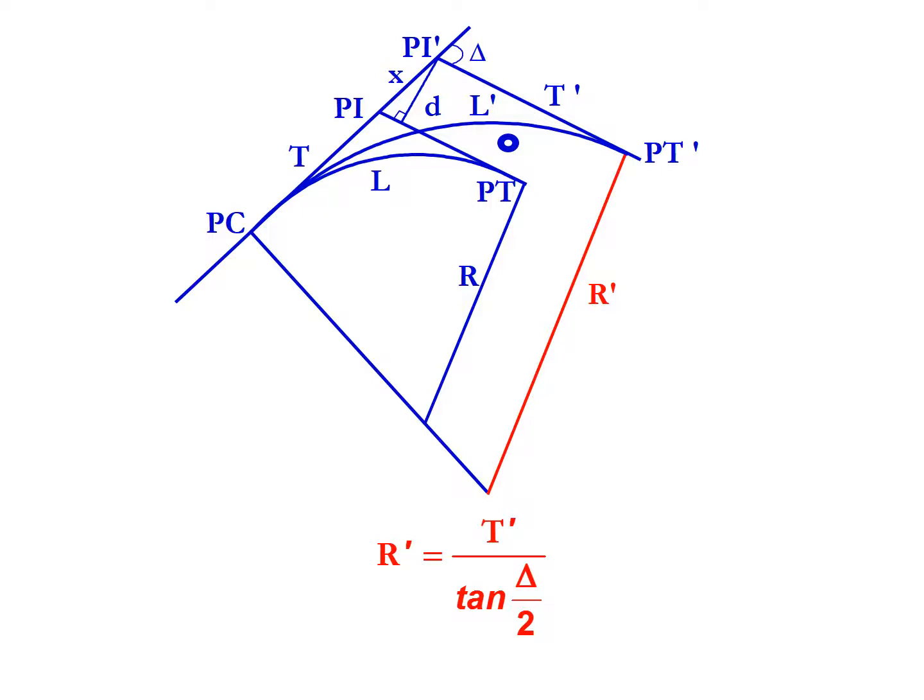DC prime, the new degree of curvature, is 18,000 over pi times the radius prime, the new radius. L prime, the new length, is equal to 100 multiplied by delta divided by the degree of curve prime. And PT prime is equal to the PC plus the new length L prime.